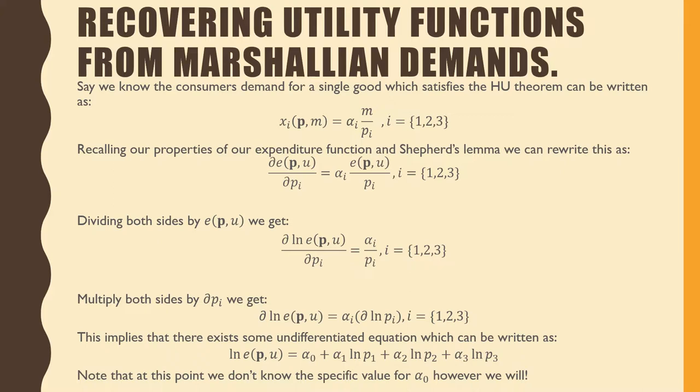So let's talk about recovering the utility functions from Marshallian demand. Say we know the consumer's demand for a set of goods which satisfies the HU theorem, which could be said as the Marshallian demand for good x_i is equal to α_i over p_i times income m, where i goes from 1 to 3, which is the number of goods considered in this demand system.